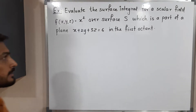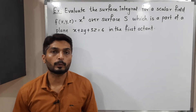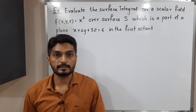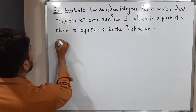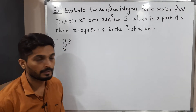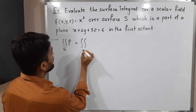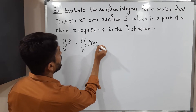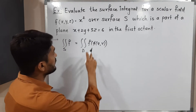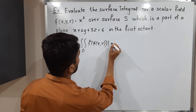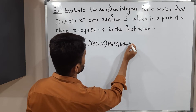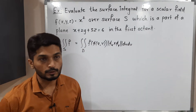Let us discuss this example where we are going to find the value of a surface integral of a scalar field. We are familiar with its definition: the double integration of F over S, where S is a surface and F is a scalar field. The definition says double integration over D of F of Phi(u,v), where Phi is a parameterization of the surface defined on D, times the norm of Phi_u cross Phi_v, dU dV.